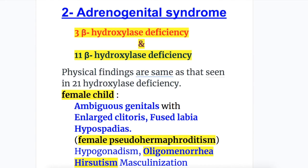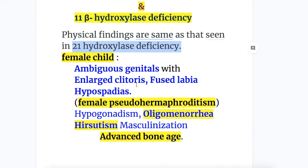The physical findings in 3 beta and 11 beta hydroxylase deficiency are similar to those seen in 21 hydroxylase deficiency. In a female child there is ambiguous genitalia with enlarged clitoris, fused labia, hypospadias, female pseudohermaphroditism, hypogonadism, oligomenorrhea, masculinization, and advanced bone age in both male and female children.